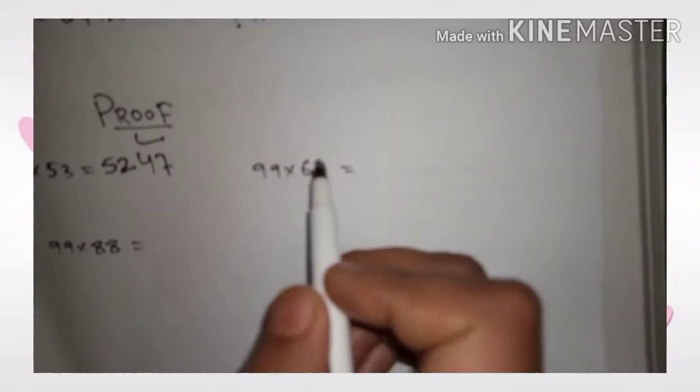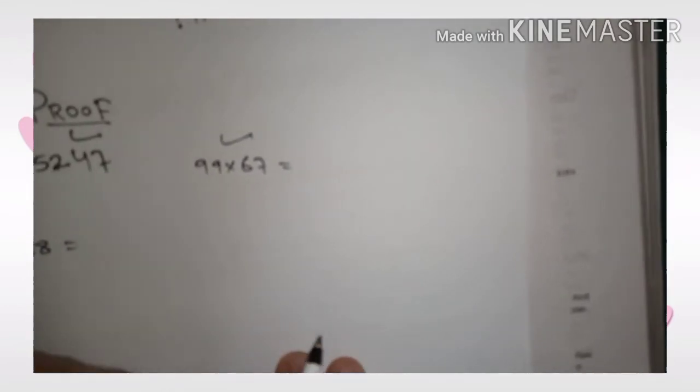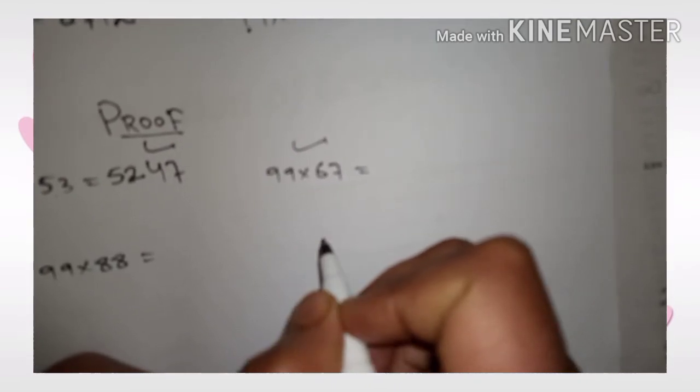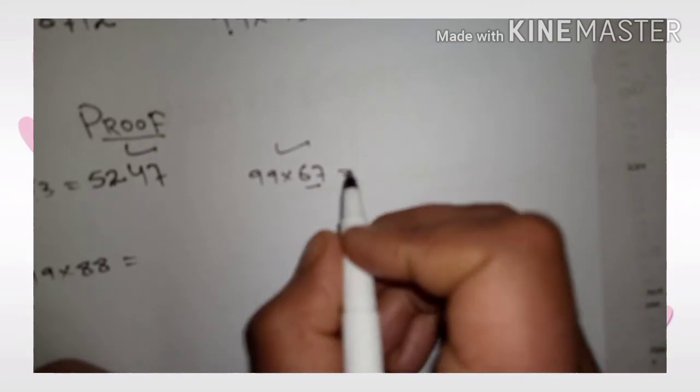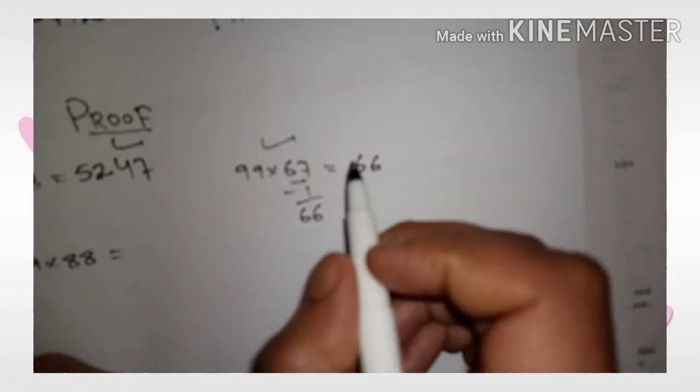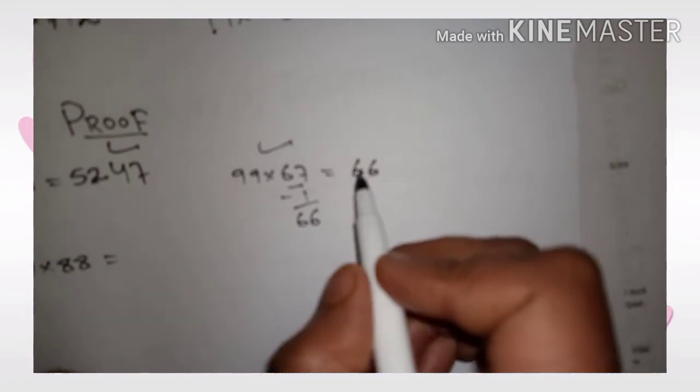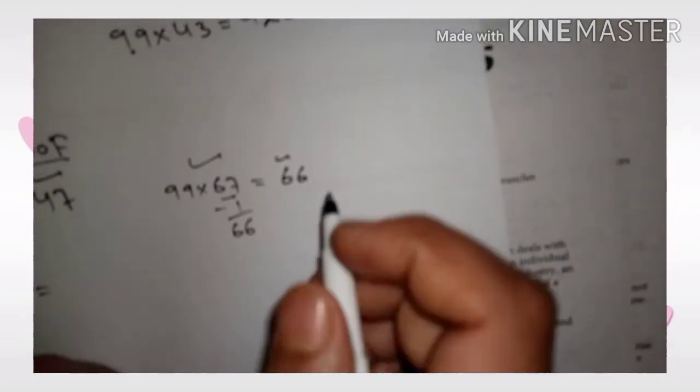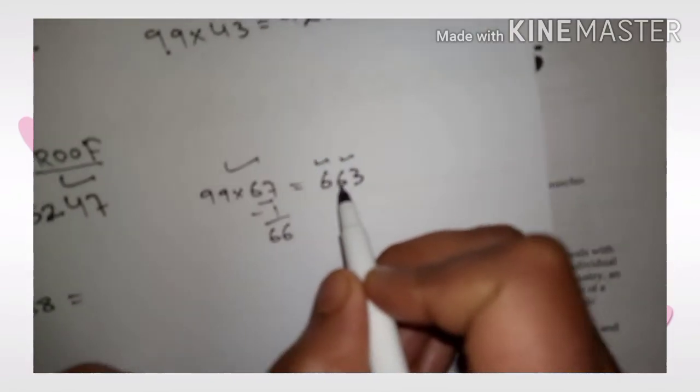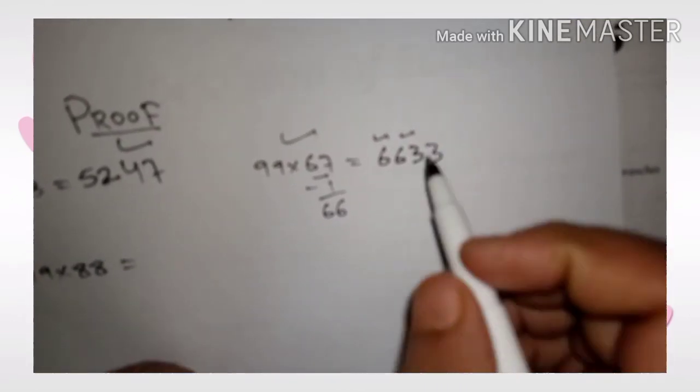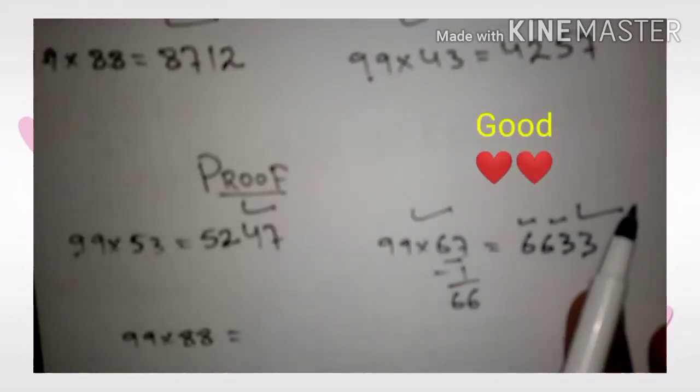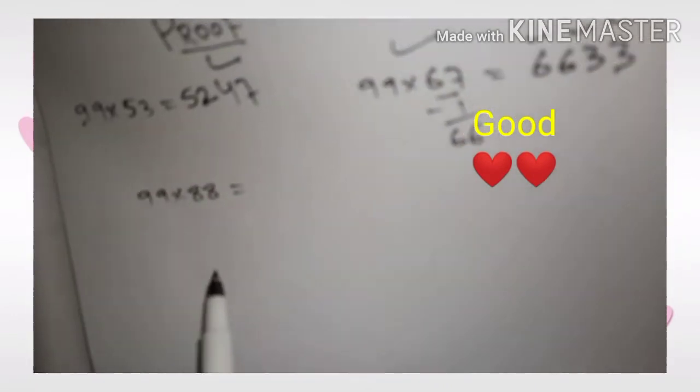Again we have 99 into 67. Same procedure I am following here. First step: we will subtract 1 from 67. When we subtract 1 from 67, we get 66. So here I write 66. Now we will see for these two numbers, what we add to 6 to get 9? We add 3. 6 plus 3 equals 9. And this is 6633. Is it interesting again? The same answer here.